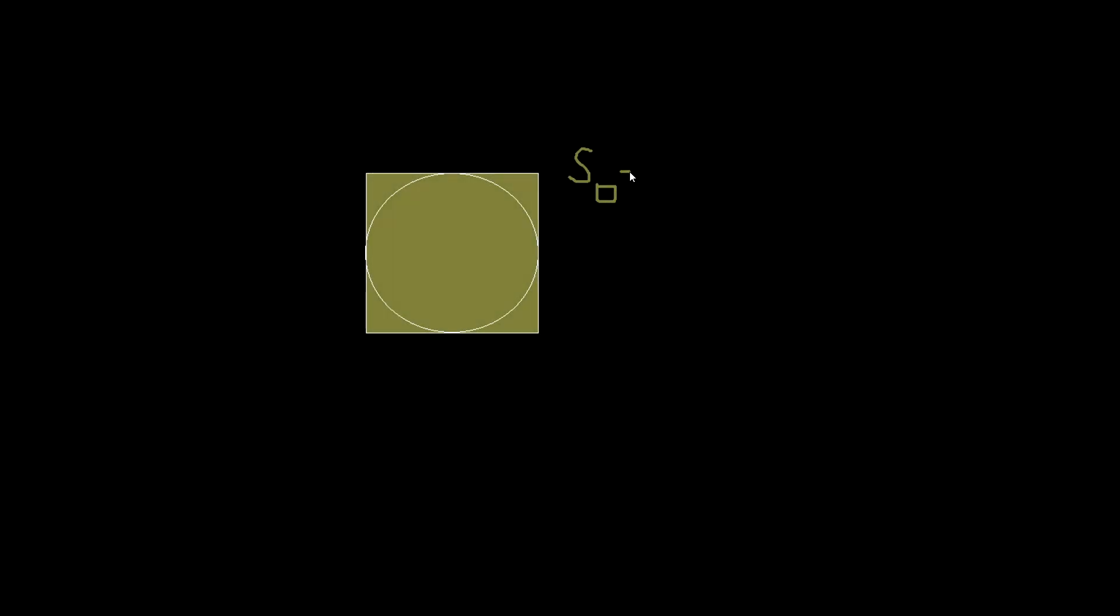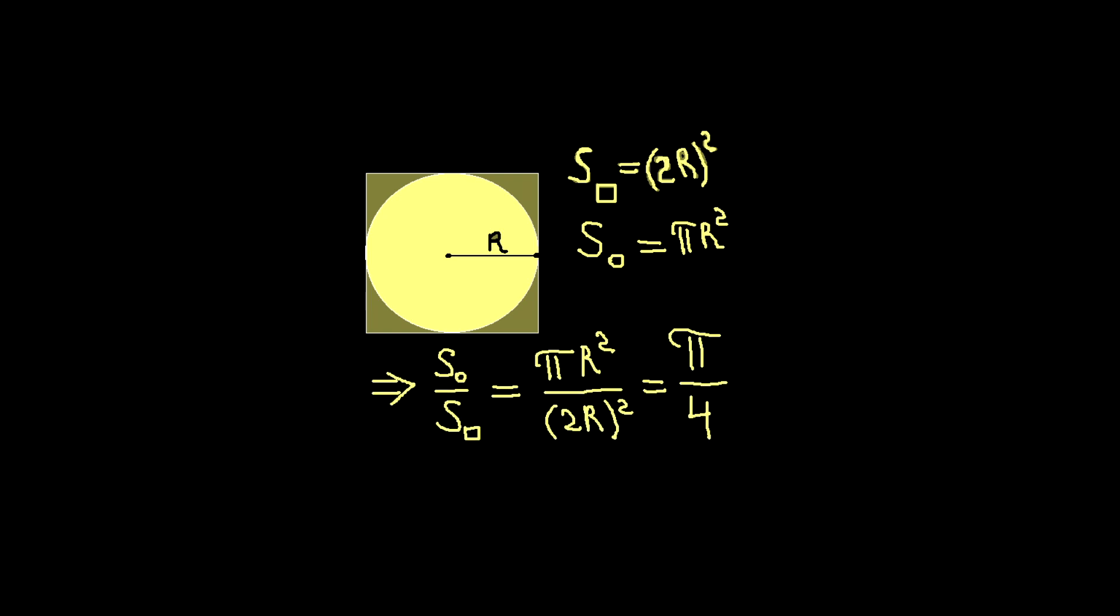Let's consider a square and place a circle inside it. The area of the square is 2 times r to the power of 2, where r is the radius of the circle. The area of the circle is pi times r squared. So, the ratio of these two areas is pi over 4.